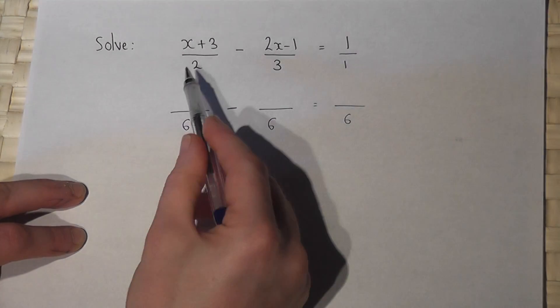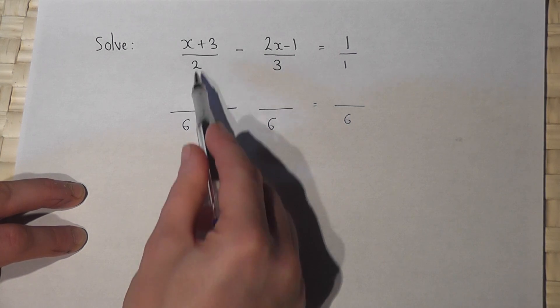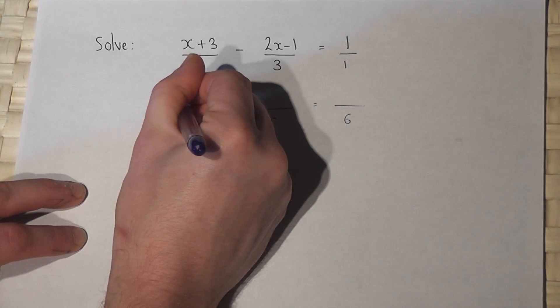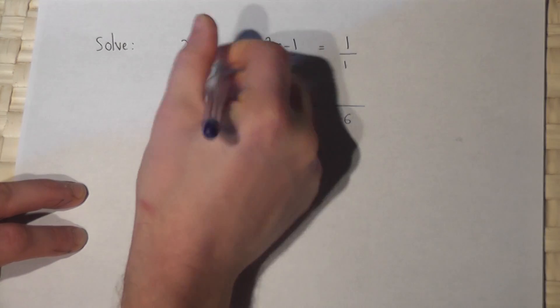Now then, this two has been timesed by three. So I multiply both terms on top by three. So that becomes three x plus nine.